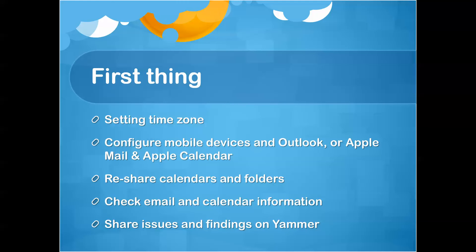The next thing you'll want to do is configure mobile devices for Outlook, Apple Mail and Calendar, and any other system you're using with your K-State email. After that, reshare calendars and folders — your shares do not migrate, so you have to reshare all that information. If you have multiple calendars, you have to put all those reshares in.